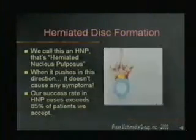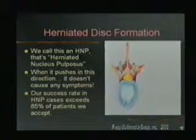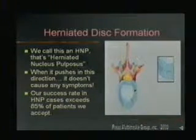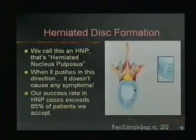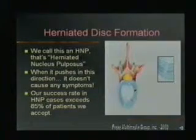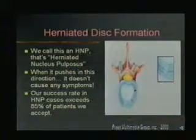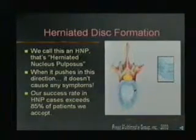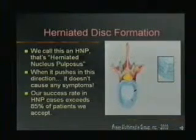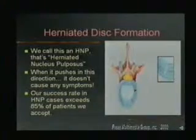The formation of a herniation — a herniated disc, or what doctors call an HNP — begins when the degenerating disc's cartilage starts cracking and the jelly in the nucleus begins to push into the cracks. Here you can see the oozing of the gelatinous nucleus pulposus into those cracks. If, as in this illustration, the herniation forms away from the nerves and cord, there are likely not going to be any symptoms. Our success rate in treating herniated nucleus pulposus cases exceeds 85 percent of the patients we accept for treatment.